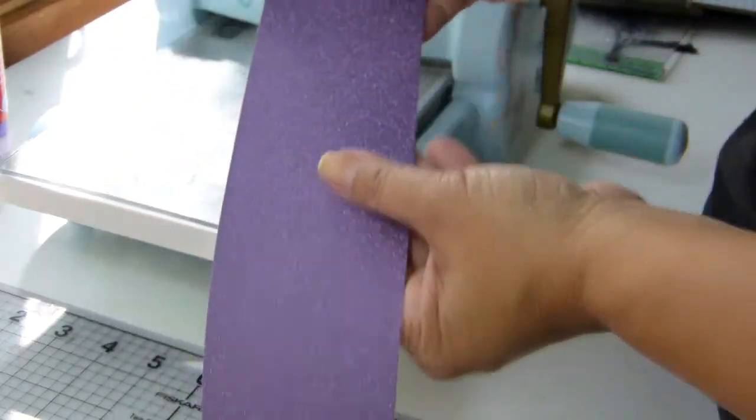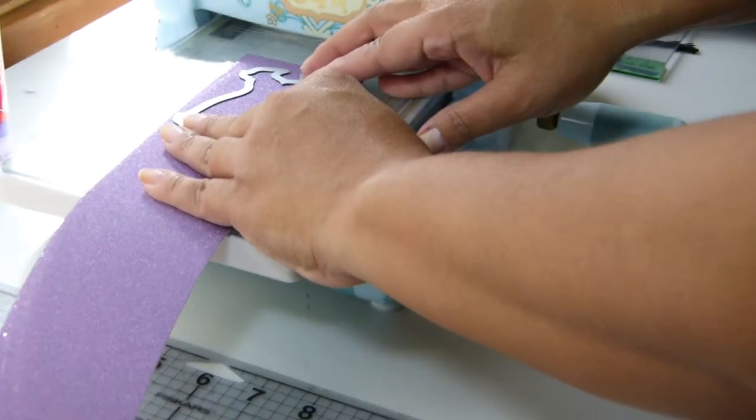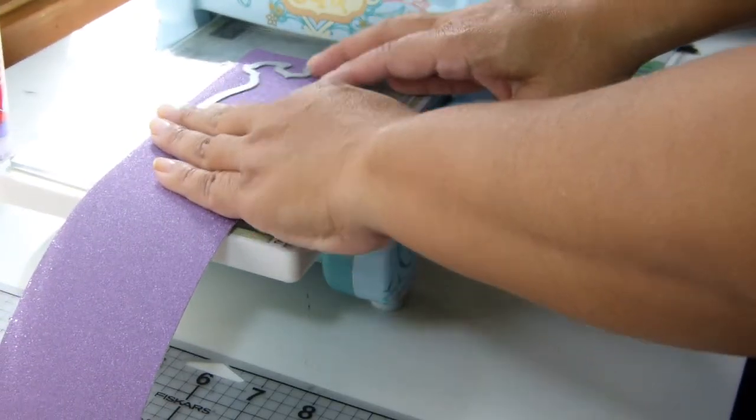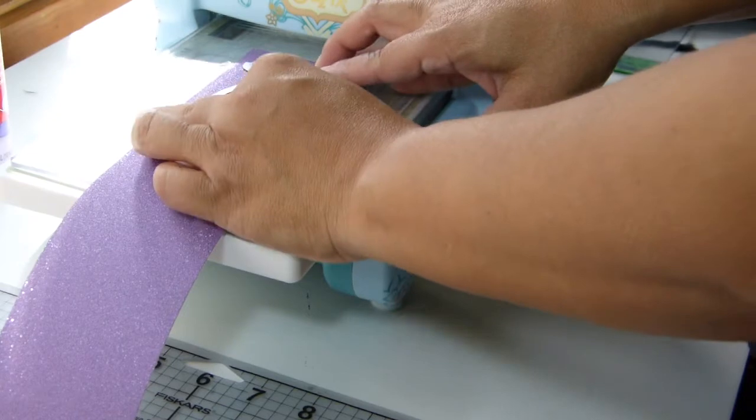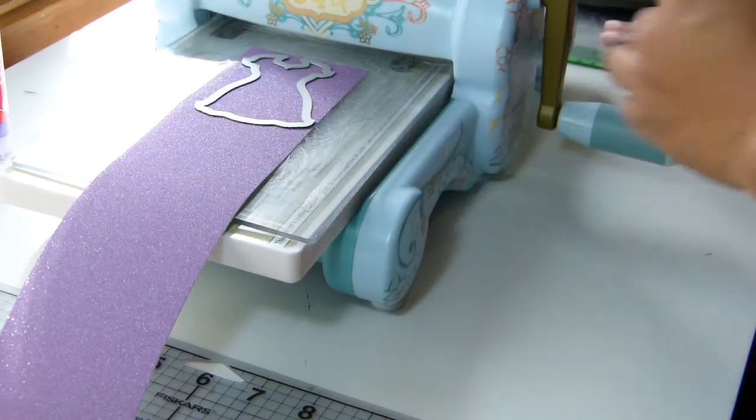I'm using this paper by Die Cuts with a View. It's really shimmery. Let me get a close up. And I'm using the Dress Forms framelits. I'm going to go ahead and just cut it.